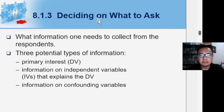Deciding on what to ask means we must be very clear about our objective first. What information do we need to collect from the respondent? Three potential types of information: primary interest and dependent variable, information on independent variables that explain the dependent variable, and information on confounding variables.